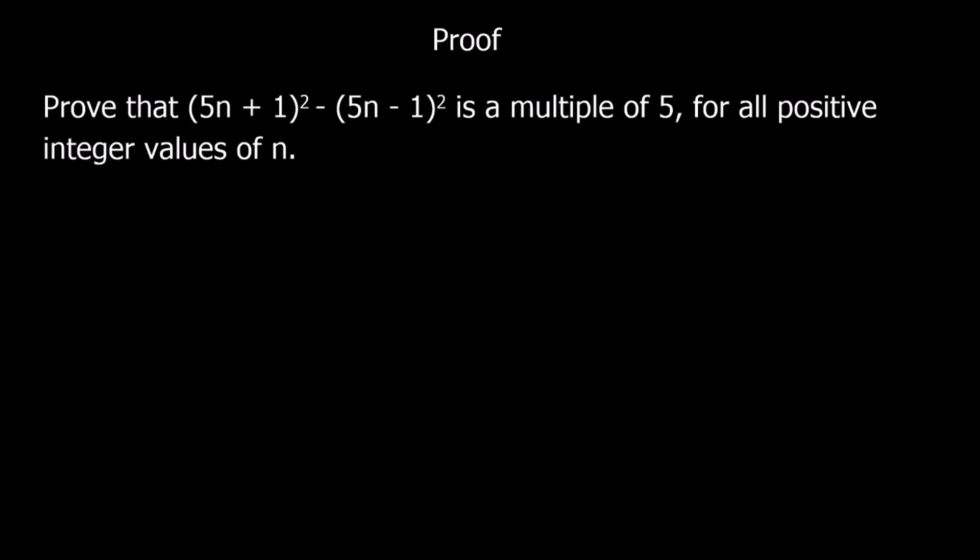Whenever we have to prove that question, we have to prove it using algebra. We can't show it by substituting numbers in to show that any number we put in gives out a multiple of 5. We need to show it, so we need to simplify the algebra so we end up with 5 times something. In this example, we just have to simplify it, so we have to expand these brackets.